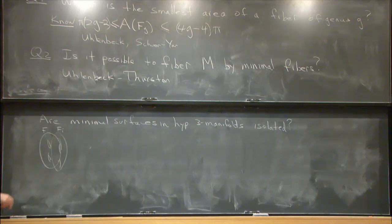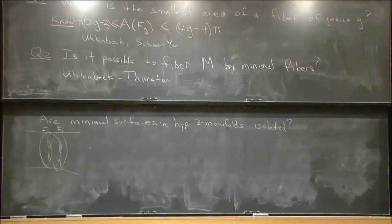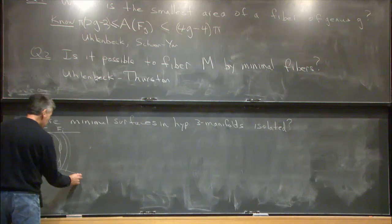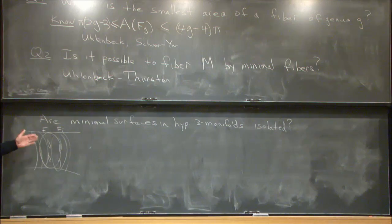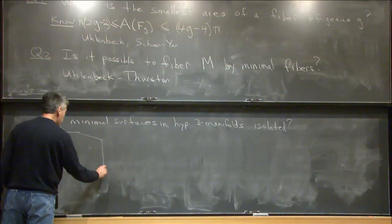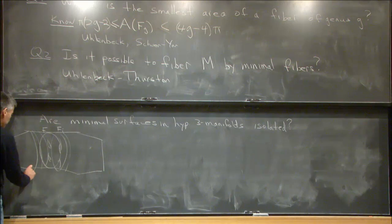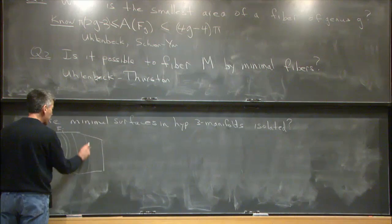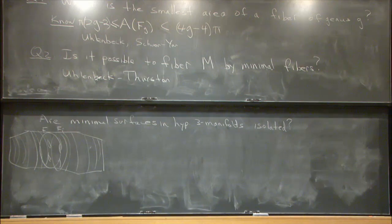If a minimal surface F were a limit of a sequence of minimal surfaces, then because everything is analytic — minimal surfaces solve analytic PDEs and the hyperbolic metric is analytic — there would actually be a family of minimal surfaces through F. You could keep extending this family, and then one of two things would happen: either you'd have a minimal fibration (for a compact three-manifold), or you'd limit to a neighborhood of a non-orientable surface. So these two questions are closely related.